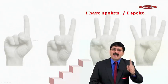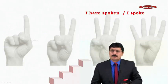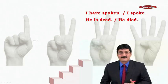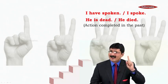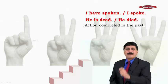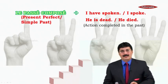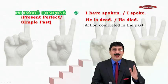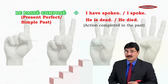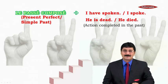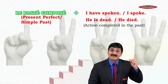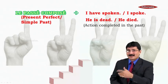We are going to do it in just four steps. But before we do the four steps, let's look at this: 'I have spoken,' 'I spoke,' 'he is dead' or 'he died.' Aren't these actions completed in the past? Absolutely! The passé composé, which is equivalent to the present perfect — 'have' or 'has' plus past participle in English — or the simple past tense, denotes actions completed in the past.